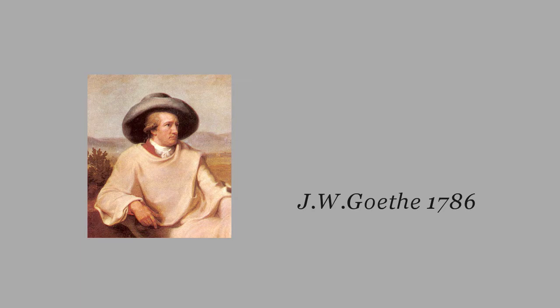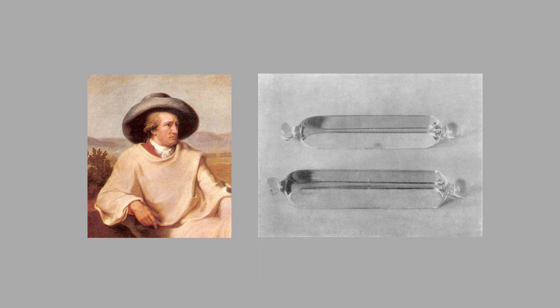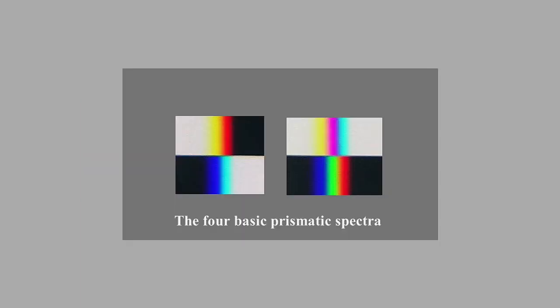When Goethe, in his search for general rules governing the appearance of color in nature, came across the prismatic colors, he thought he had found what he was looking for. His observations boiled down to four types of color spectra, which taken together supply material for a complete color system with promising features such as complementarity and polarity, and where each color gets its proper place between white and black.